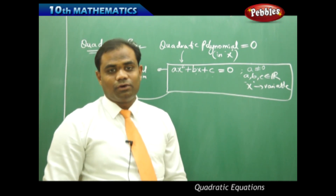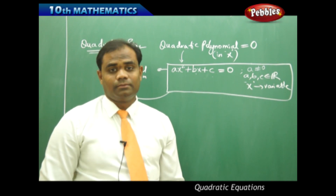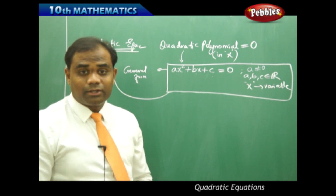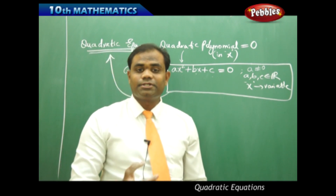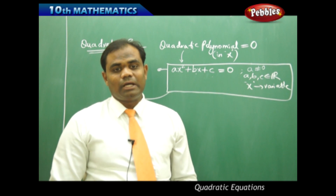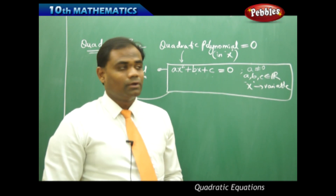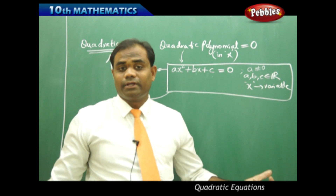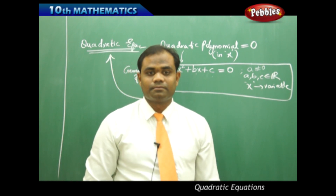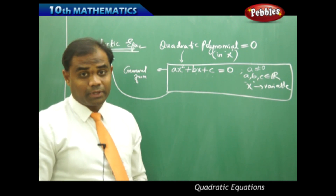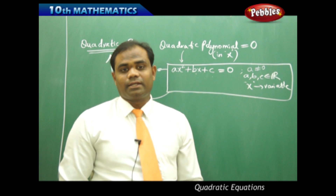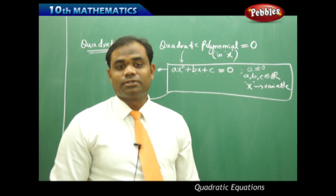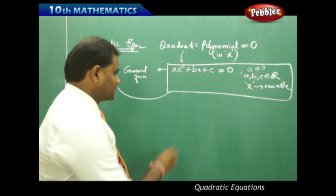This is the basic definition of a quadratic equation in general form. As we have seen, a linear equation has only one solution, a quadratic equation has two solutions, a cubic equation has three solutions, and so on — a polynomial of degree n has n solutions. Therefore, we identify the two solutions of a quadratic equation using various properties, which we will discuss in the next sessions. How to find the value of x, the unknown, using different methods is what we call finding the solution of a quadratic equation.